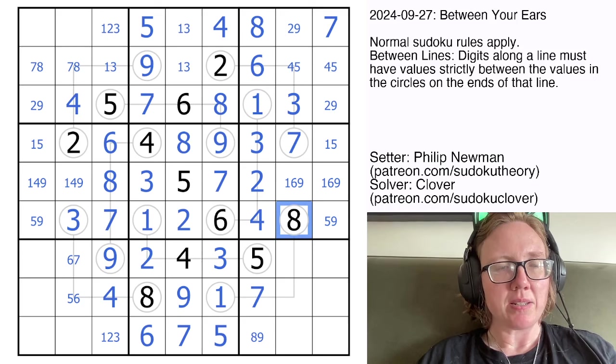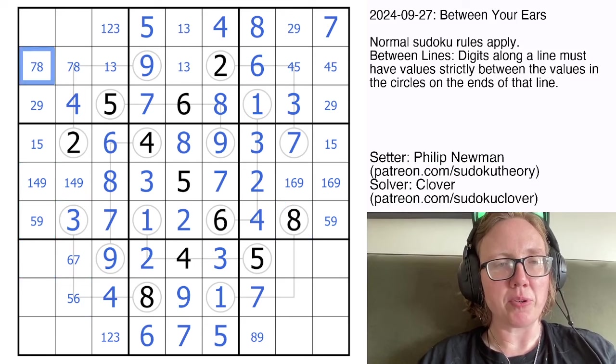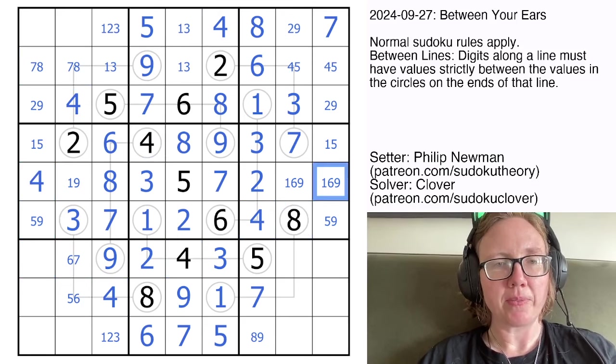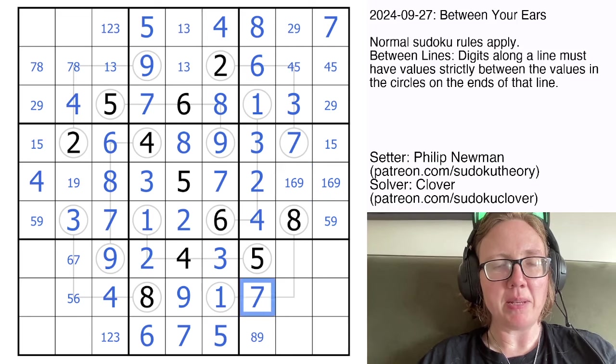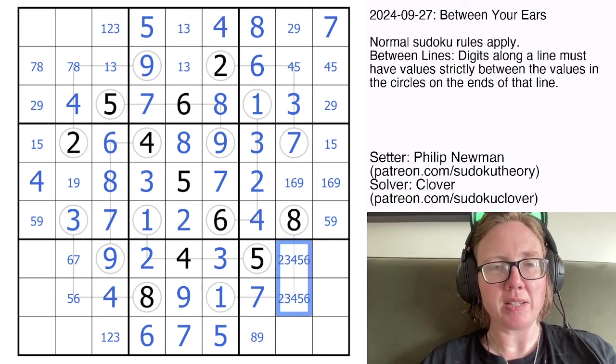Alright, what do I need next? So this can't be a 4, so this is my 4 in a row. These cells have to be in between 1 and 8. Those are 2, 3, 4, 5, 6. That means this can only be 6 by Sudoku.